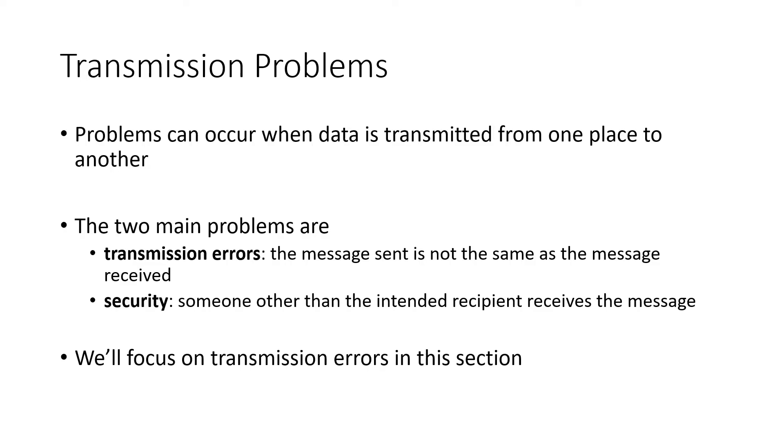When we talk about transmitting data from one place to another, that's something we do all the time. We communicate through cell phones, using social media. The two main problems that occur when we send data are transmission errors, where the message received is not the same as the message sent, and security, where somebody other than our intended recipient receives and reads the message. We're going to focus on transmission errors in this section, and we'll talk about security problems in the next section.